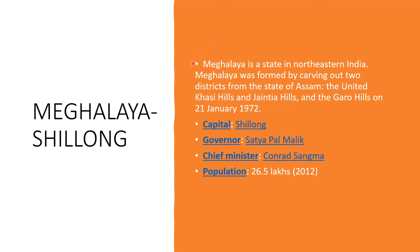Next one is Meghalaya and its capital is Shillong. Meghalaya is a state in northeastern India. It was formed by carving out two districts from the state of Assam — the United Khasi Hills and Jaintia Hills and the Garo Hills — on 21st January 1972. The capital is Shillong, governor is Satya Pal Malik, chief minister is Conrad Sangma, and the population is 26.5 lakhs in 2012.